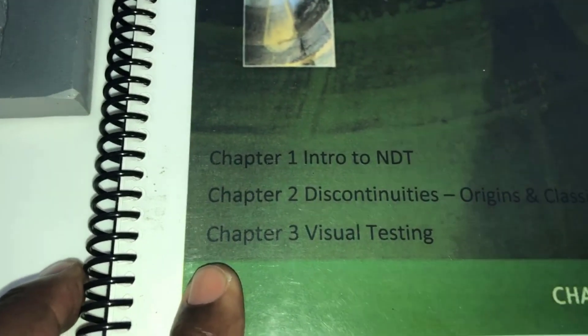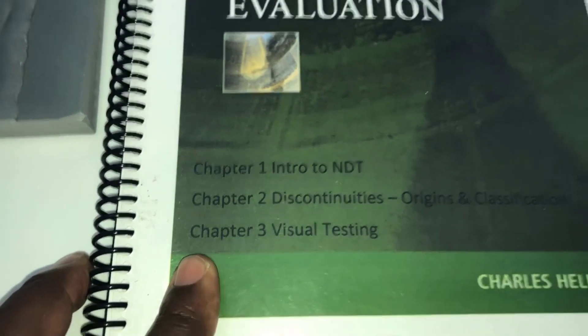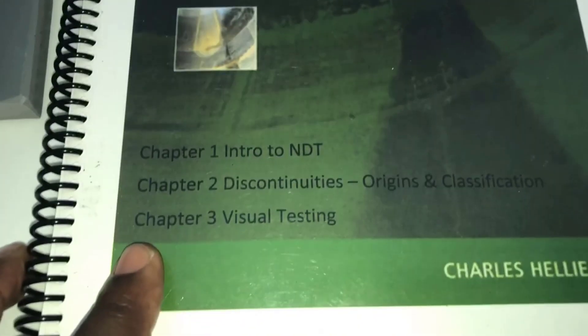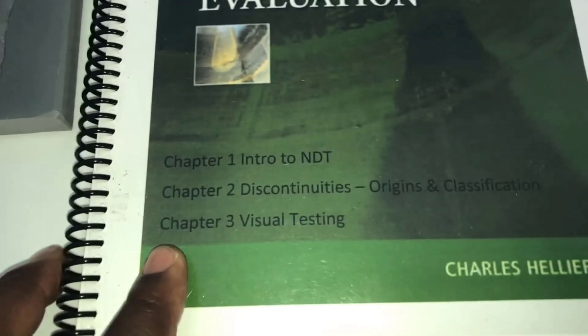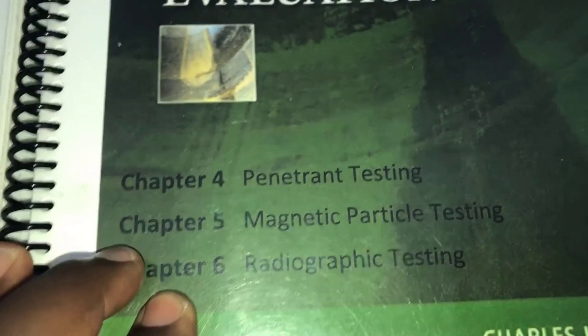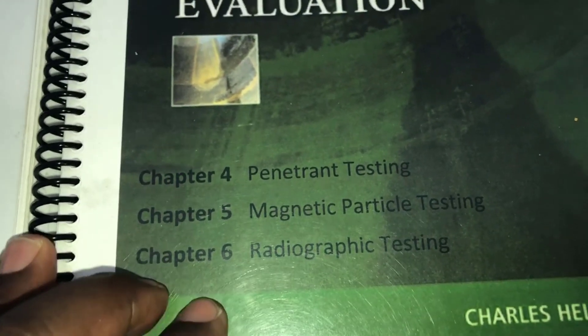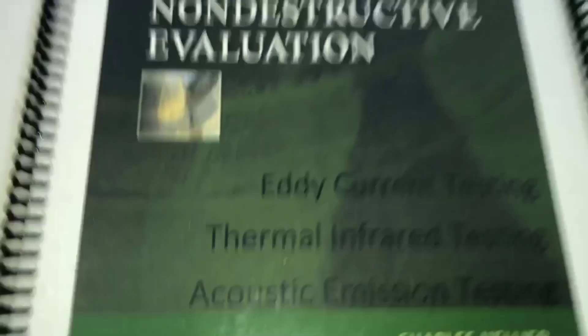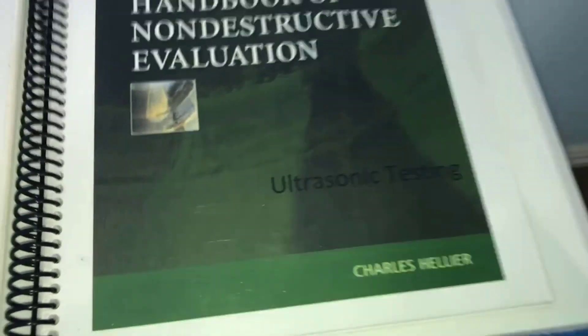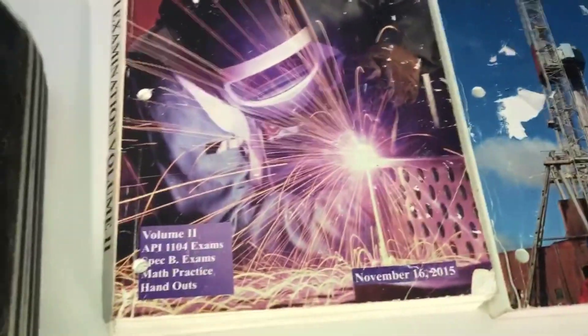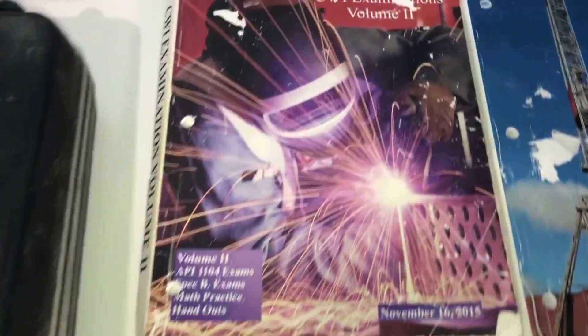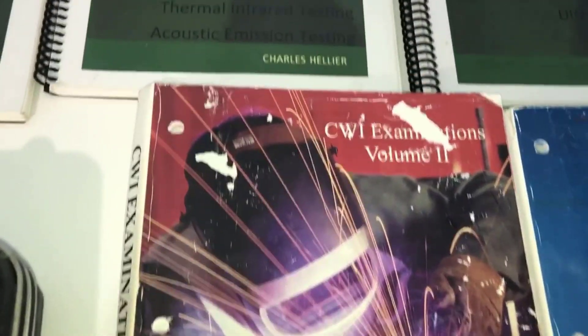If you want to become a CWI, there's a lot of stuff you're going to have to study. As you can see right here, we got Chapter 1: Intro to NDT, Chapter 2: Discontinuities, Chapter 3: Visual, then Chapter 4: Penetrant Testing, Mag Particle Testing, Radiography Testing, Eddy Current, and Ultrasonics. I'm also putting together some more tests.